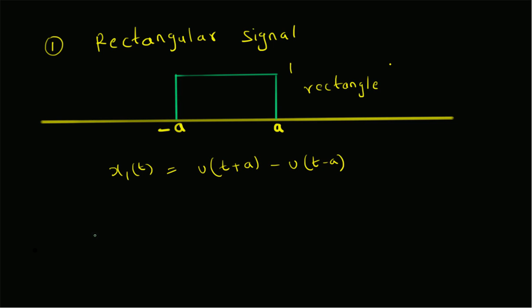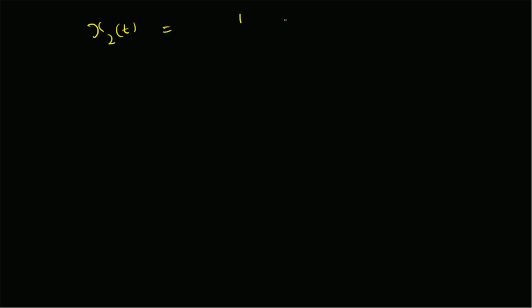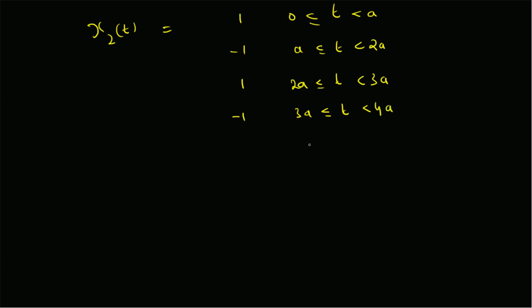Next, let us look at the plotting of a square wave of length equal to two periods. We define a signal x2(t) which is equal to 1 in the range from 0 to a, equal to minus 1 in the next interval from a to 2a, then plus 1 in the interval 2a to 3a, and finally minus 1 in the interval 3a to 4a. This is a square wave of length equal to two periods, where the period is equal to 2a.